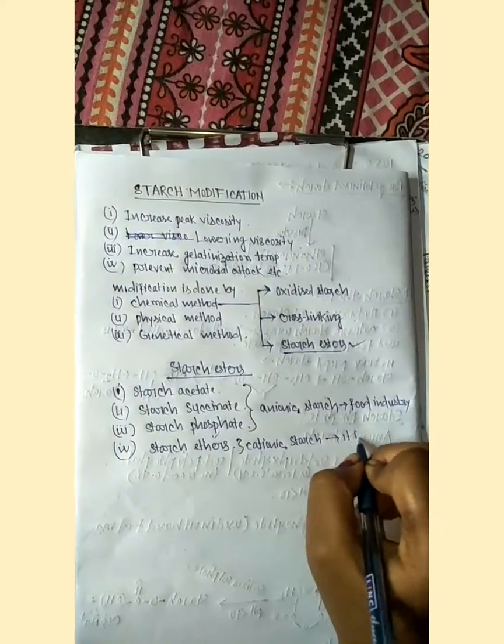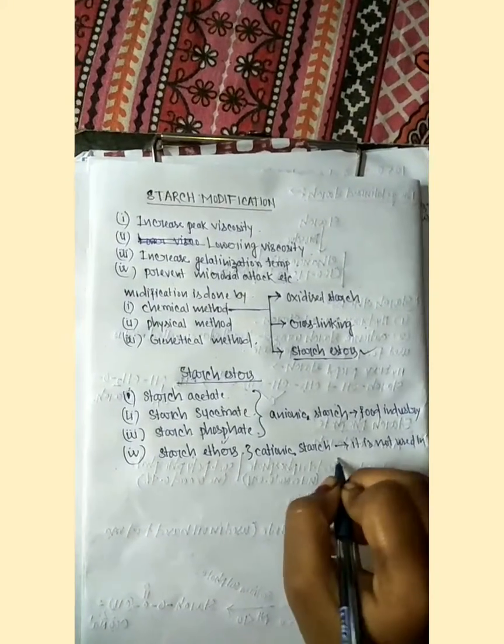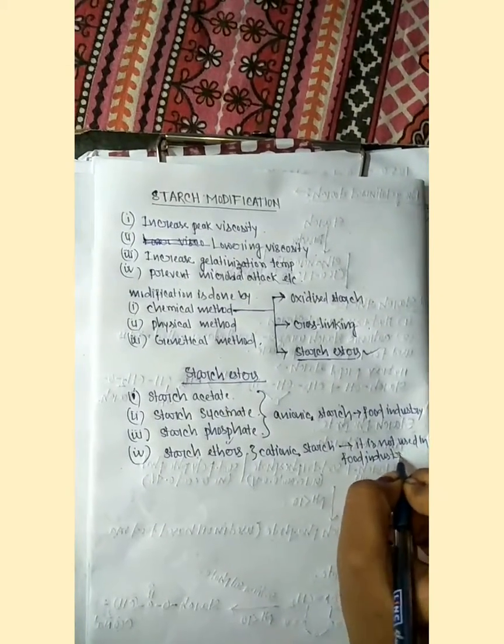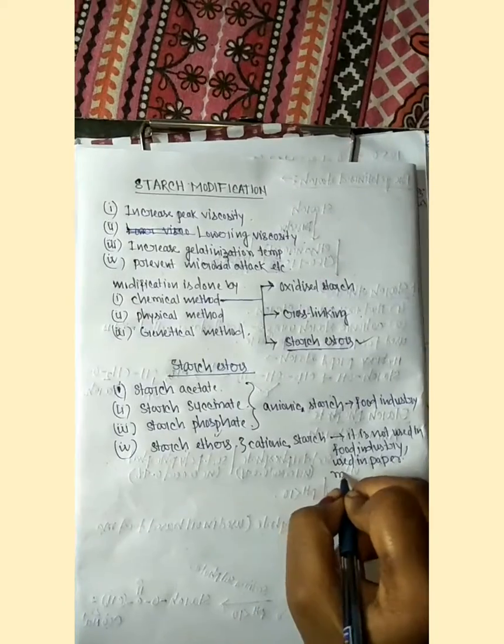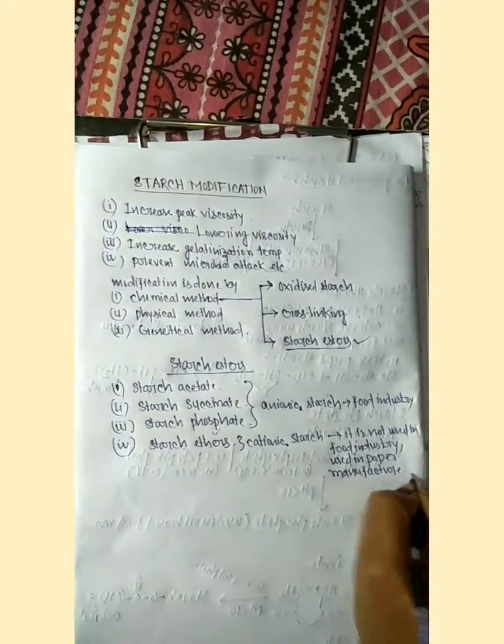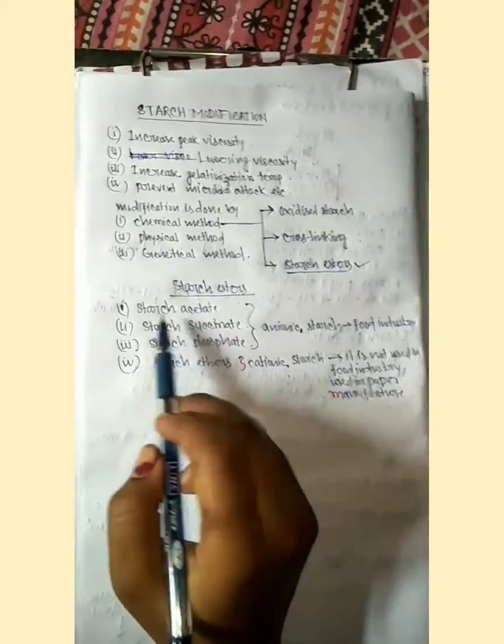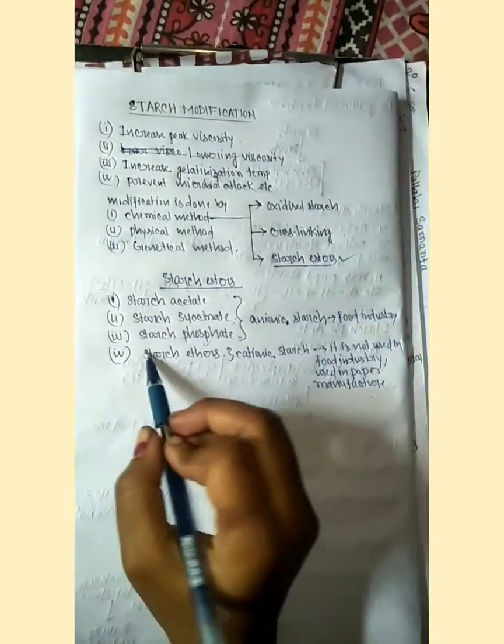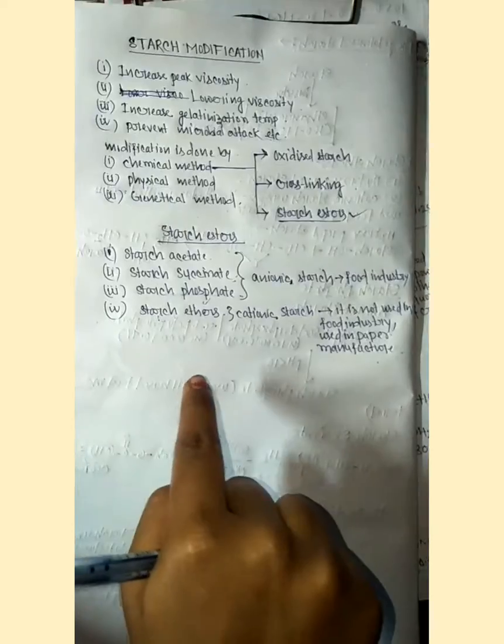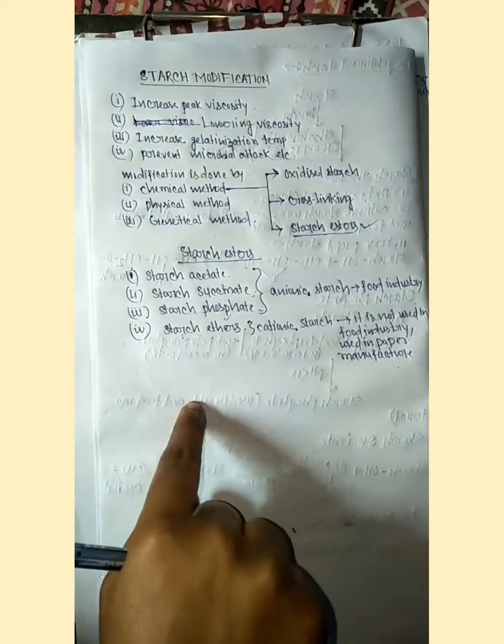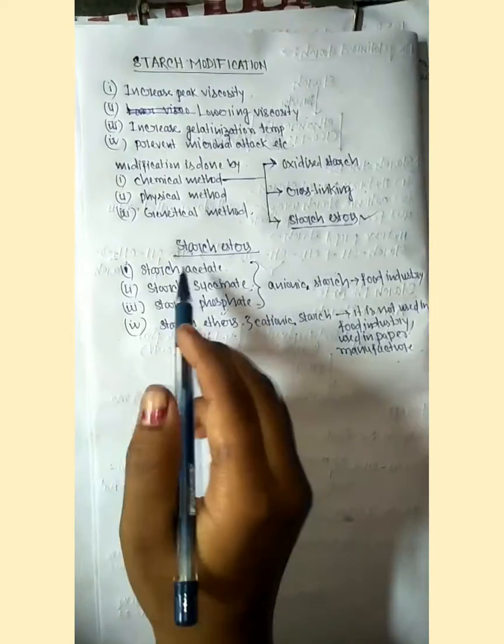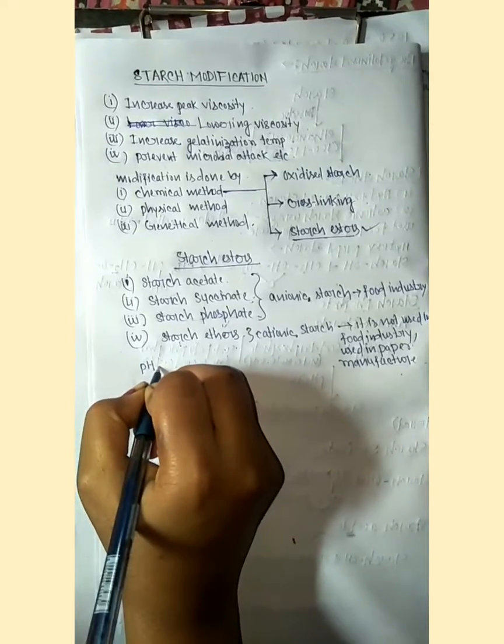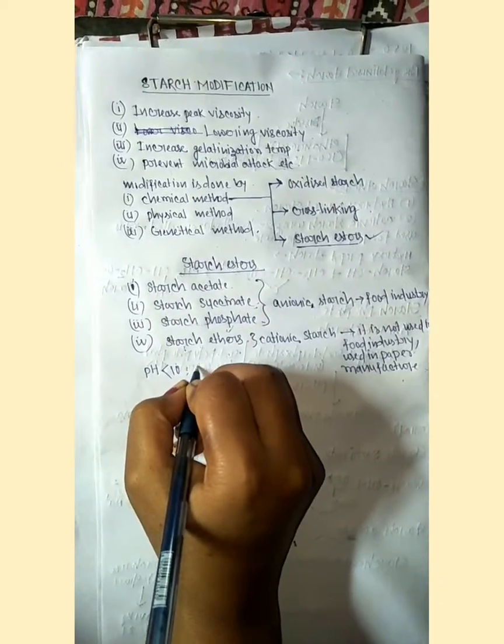Cationic starch is not used in food industry but is used in paper manufacturing. Now I'll show how starch acetate, starch succinate, and starch phosphate are prepared. The pH is a crucial thing in starch modification. pH has to be maintained at less than 10, or pH 8 is more appropriate for starch ester preparation.